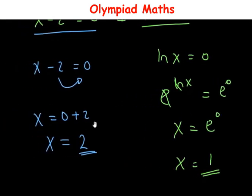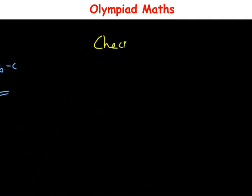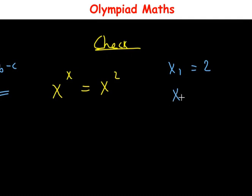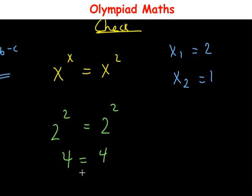So we have x equals 2 and x equals 1. Let us check these solutions. For x equals 2: 2 raised to power 2 equals 2 raised to power 2, which is 4 equals 4. The left-hand side and right-hand side are the same, confirming x equals 2 is a correct solution.